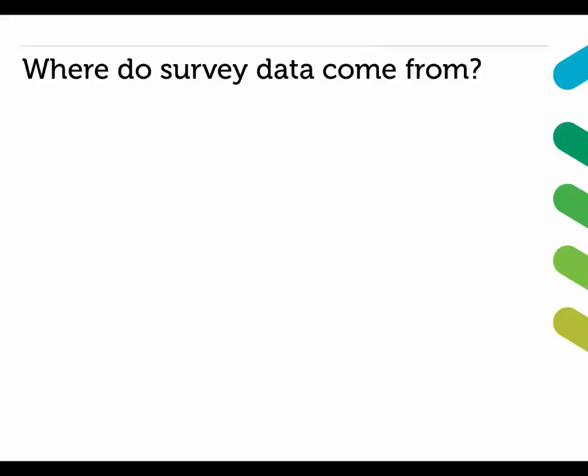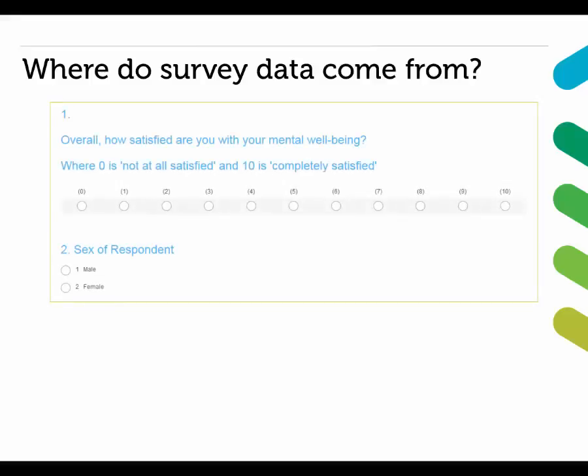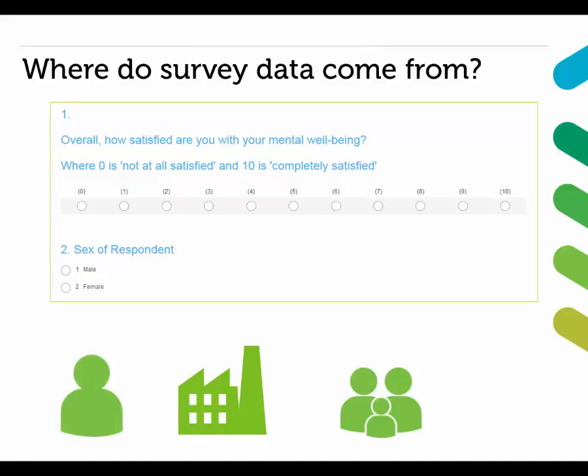Most survey data are collected for a specific research purpose. Standardised information is gathered about a range of characteristics that vary. This might be done by sending out a questionnaire for respondents to complete on paper or online, or it might be completed by interviewers either face to face or over the phone. Respondents are often individuals, but this too can vary, as some surveys relate to businesses, schools, households or other units.